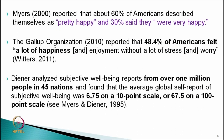Once we have these well-standardized psychological tests, we try to understand how happiness is spread in a particular culture. Myers in 2000 reported that about 60% of Americans described themselves as pretty happy and 30% said they were very happy. The Gallup organization in 2010 reported that 48.4% of Americans felt a lot of happiness and enjoyment without a lot of stress or worries — meaning about 50% of the population feels happy. Diener analyzed subjective well-being reports from over 1 million people in 45 nations and found that the average global self-report of subjective well-being was 6.75 on a 10-point scale, or 67.5 on a 100-point scale.